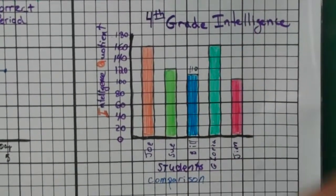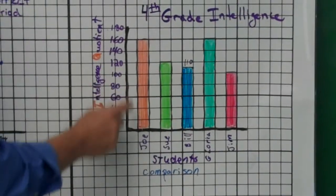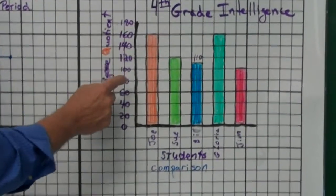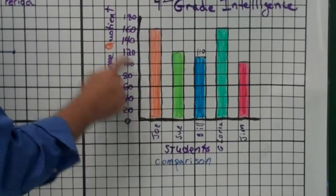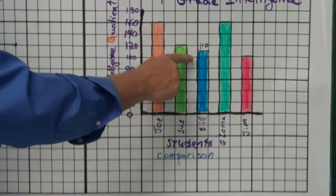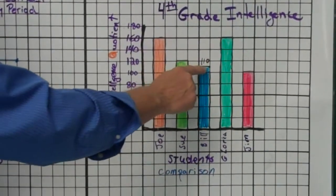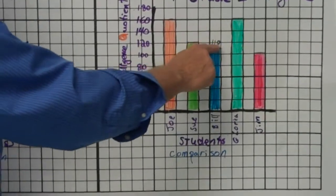You must be consistent with every single bar so that way it doesn't skew the way that it looks. You don't want to skew the data. Now sometimes the data doesn't come out exactly on your intervals. For instance, Bill's IQ is 110.